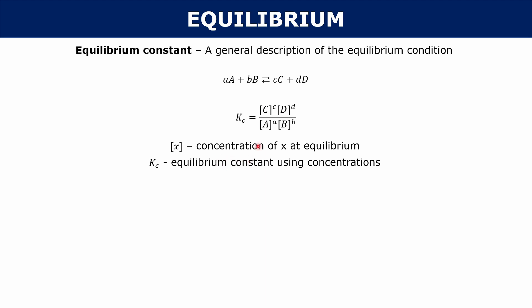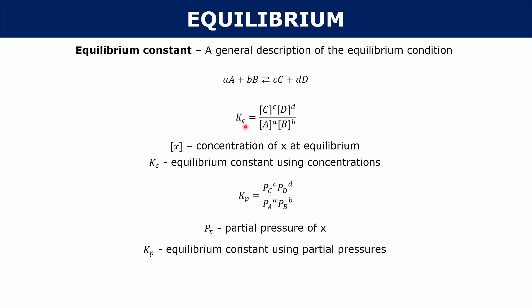Whenever you find the equilibrium constant using concentrations, we call that KC. Sometimes you might just see it written as K because it's so widely used. There's also a different type of equilibrium constant called KP, which is the equilibrium constant using partial pressures. KP can only be used when all your reactants and products are gases. In that case, KP equals the partial pressure of C to the power c times the partial pressure of D to the power d, over the partial pressure of A to the power a times the partial pressure of B to the power b. Depending on what data you're given, if you have partial pressures, you would use this formula.